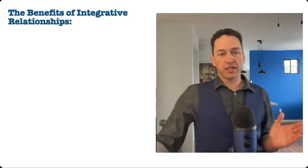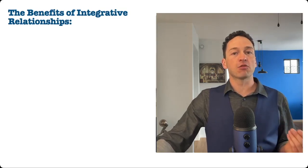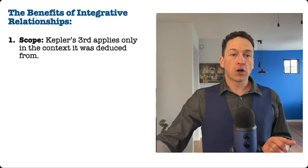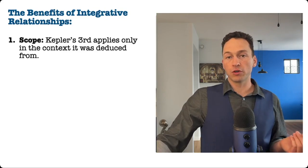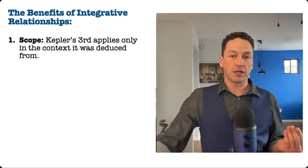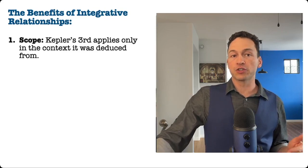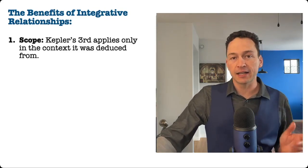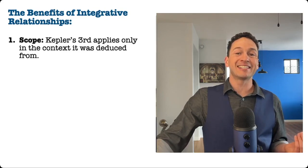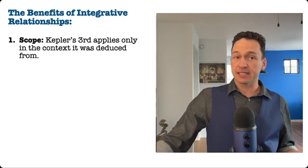What is the point of a deductive integration of this kind? The integration between gravitation and Kepler's third gives us three benefits. First, since we now know that motion according to Kepler's third is caused by a specific gravitational situation, we know that if we were to ever see an exception to Kepler's third, that means that the gravitational situation may not apply. For example, it turns out that Uranus does not move according to Kepler's third exactly. And part of how we deduced Kepler's third from gravitation is with the assumption that the sun is the only significant gravitational force acting on the orbital body. Now, it turns out that for Uranus, this is not the case since Neptune is pulling on it.